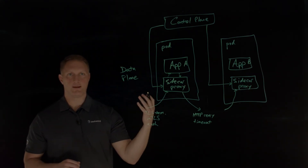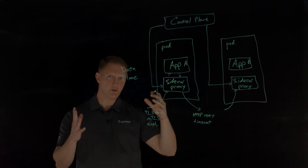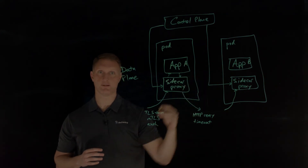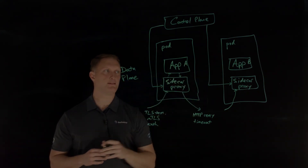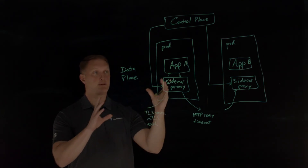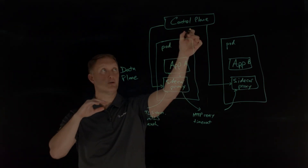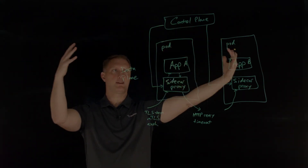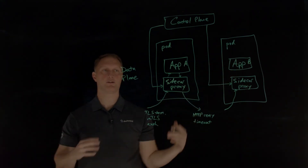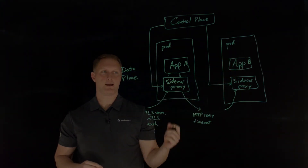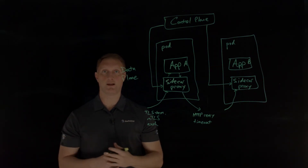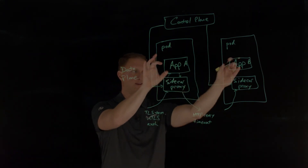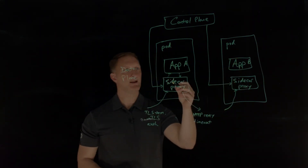The sidecar is going to route traffic between these pods and between these services — those are the data plane type functions. They need to be managed by the control plane of the service mesh. All of this is contained within a Kubernetes cluster that has the ingress controller, the API server, and all those things a Kubernetes cluster has. This is a zoom in on these different pods that have these proxies that help the application.